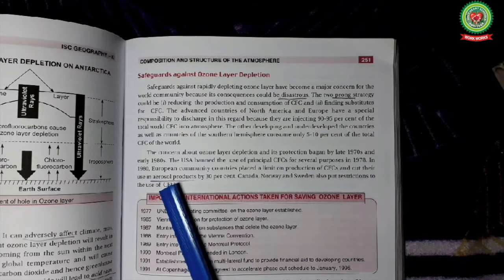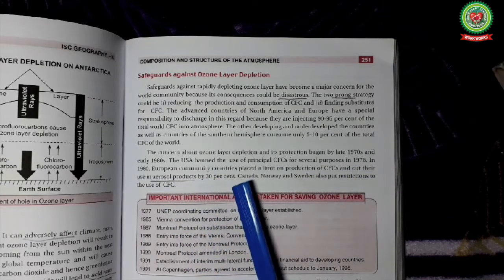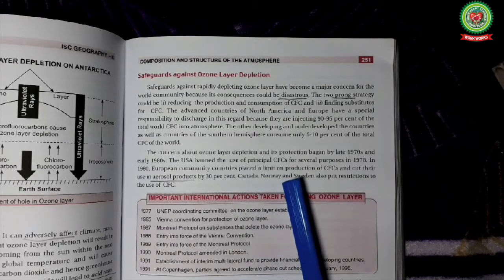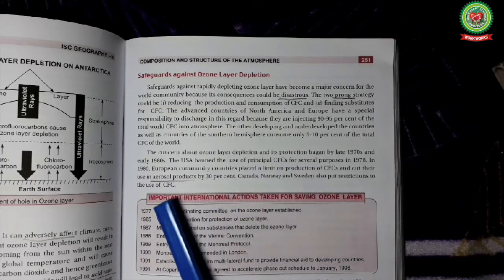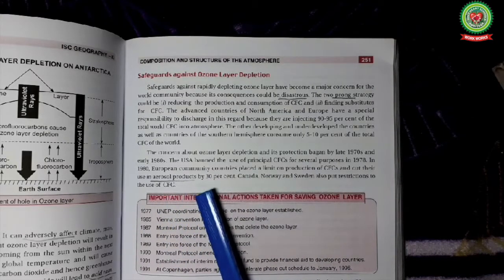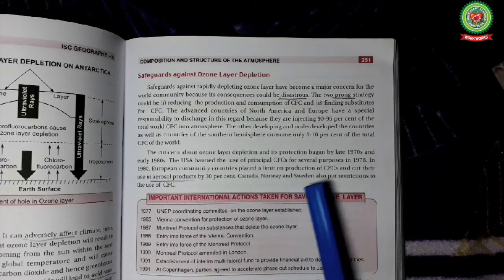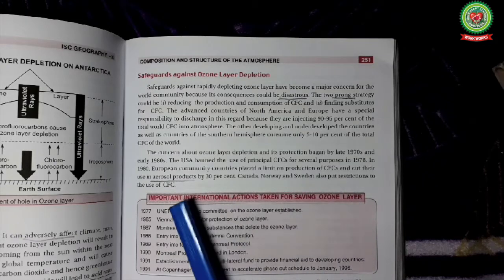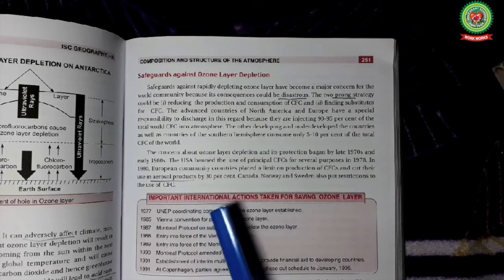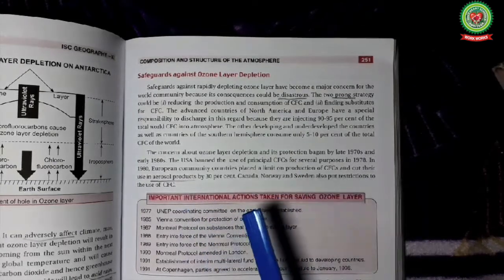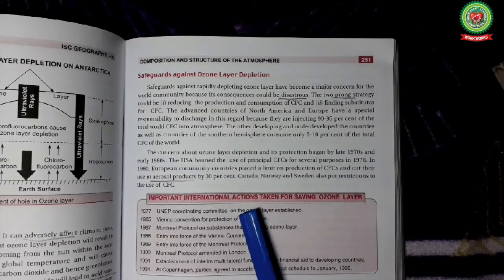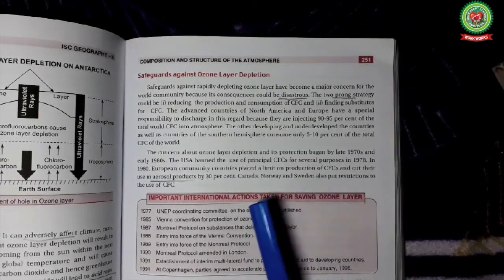In 1980, European countries placed a limit on production of CFC and cut their use of aerosol production by 30%. Canada, Norway, Sweden are also putting restrictions in the use of CFC. Due to all these efforts, the size of the ozone hole over Antarctica is decreasing.